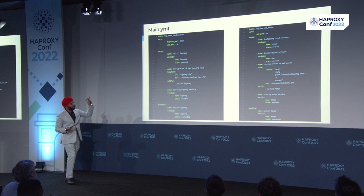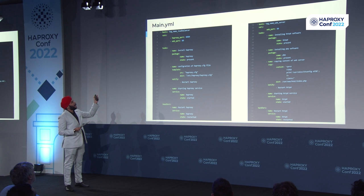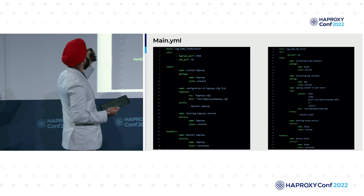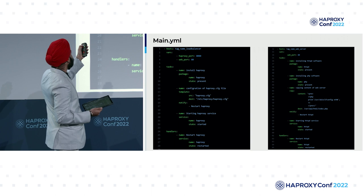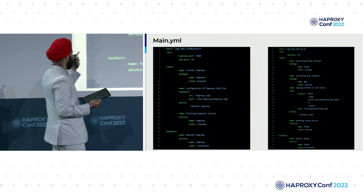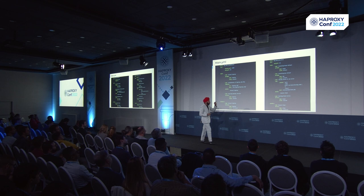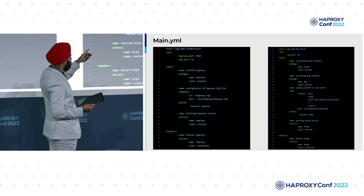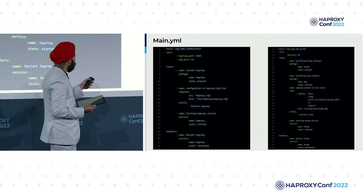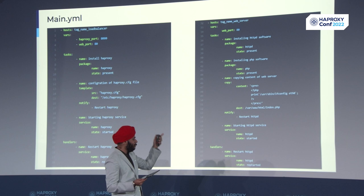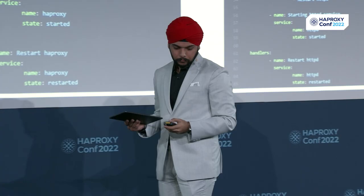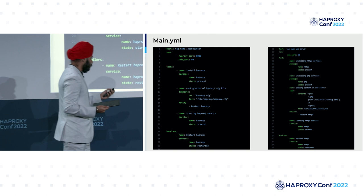This is the main YAML file which will be used for AWS. We have a tag name 'load balancer' — I'll explain that later. We have variables: HAProxy port and web port. We have the tasks again: installing HAProxy, configuration file, starting the service, and restarting as a handler. Then we have the web servers — Apache web server, PHP, and the code. I've used a different module here so the audience knows we don't really have to copy a file; we can write it directly. Then starting the service and handler.